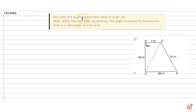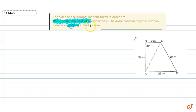The question given is: the sides of a quadrilateral field taken in order are 26m, 27m, 7m, and 24m respectively. The angle contained by the last two sides is a right angle. We have to find its area.